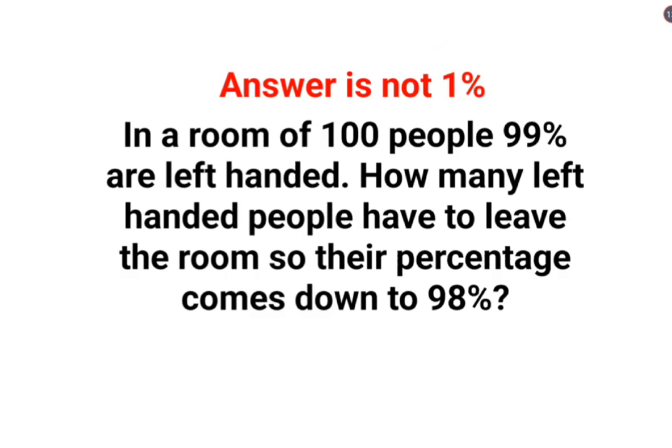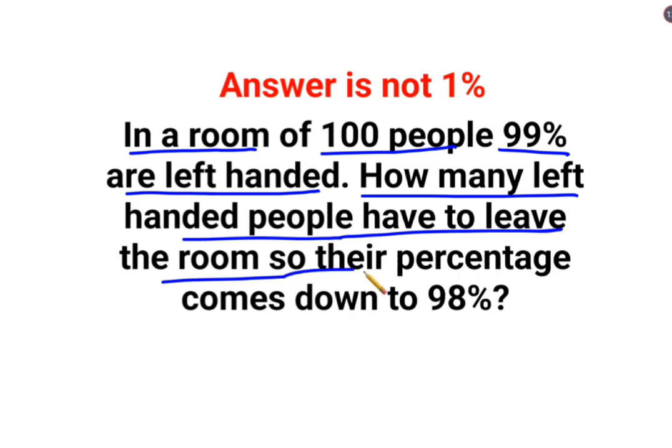Please understand that when you have something like this, you need to use certain logics. So see, they have in a room 100 people, 99% are left-handed. How many left-handed people have to leave the room so that their percentage comes down to 98%?